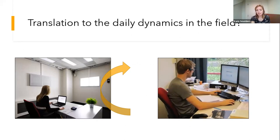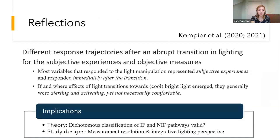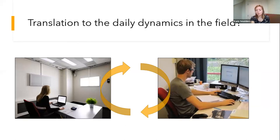These studies serve as an illustration of experimental designs that can be used to study temporal profiles of responses to light and to better understand the effects of light on everyday functioning. In those situations we can control most other potential variables by keeping conditions as constant as possible. Yet in order to translate those findings into everyday practice and the daily dynamics in the field, field assessments are also required. However, they have low internal validity as we cannot control for all varying factors or measure everything in the field.